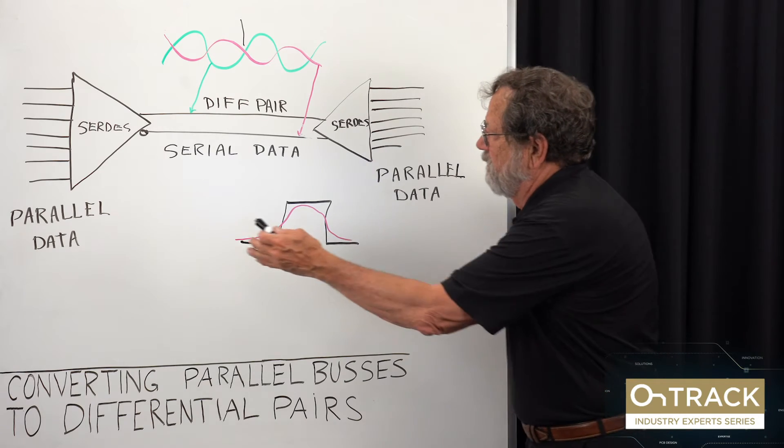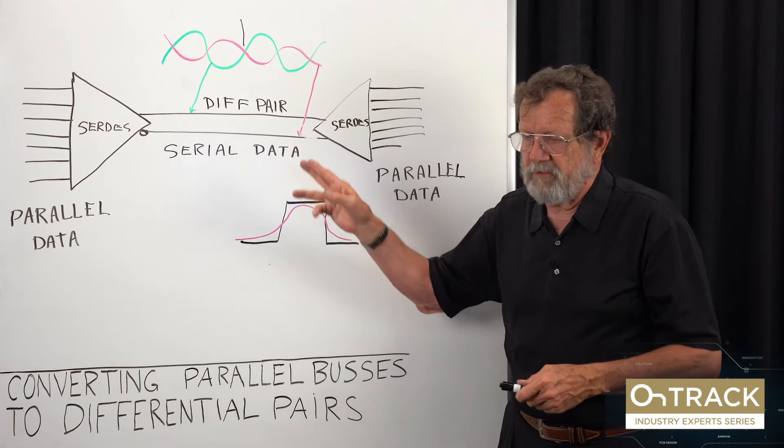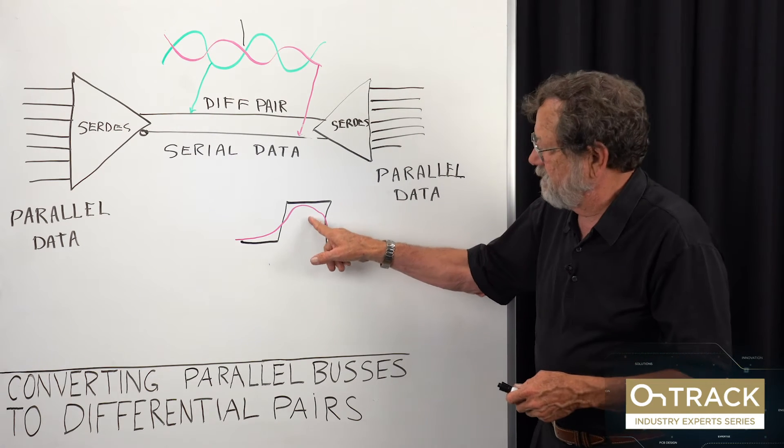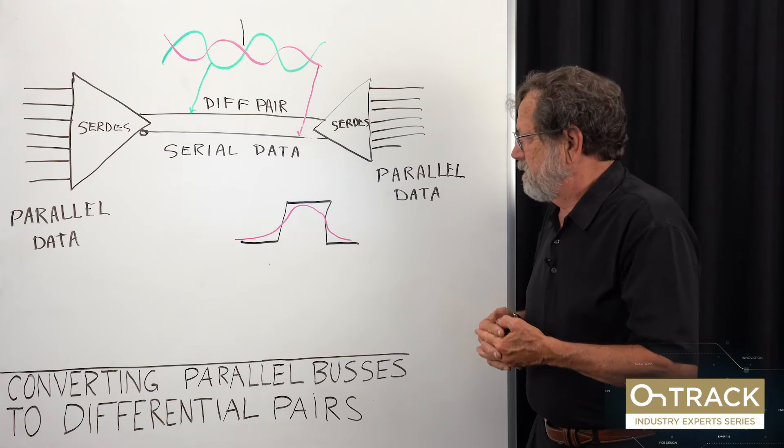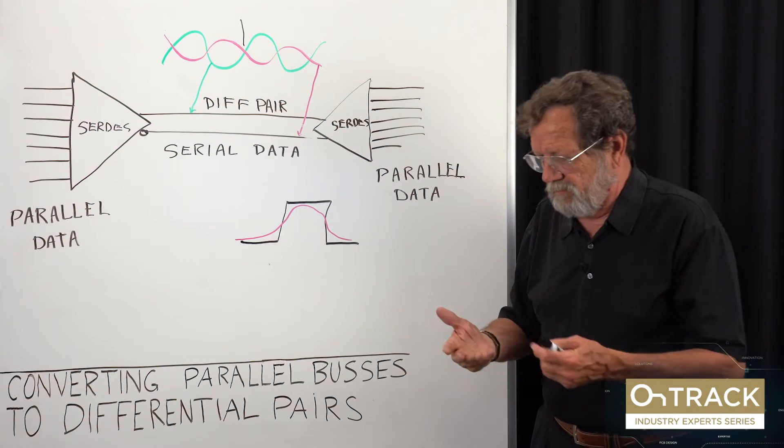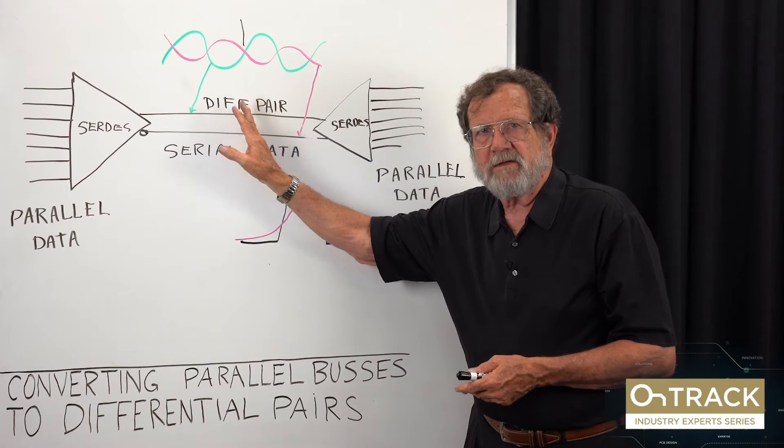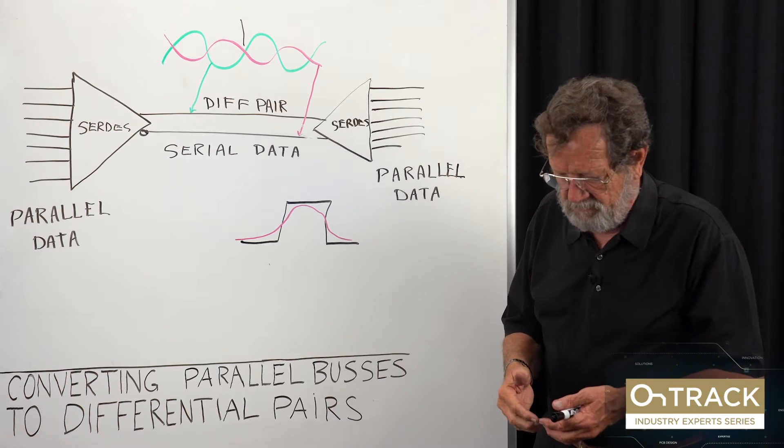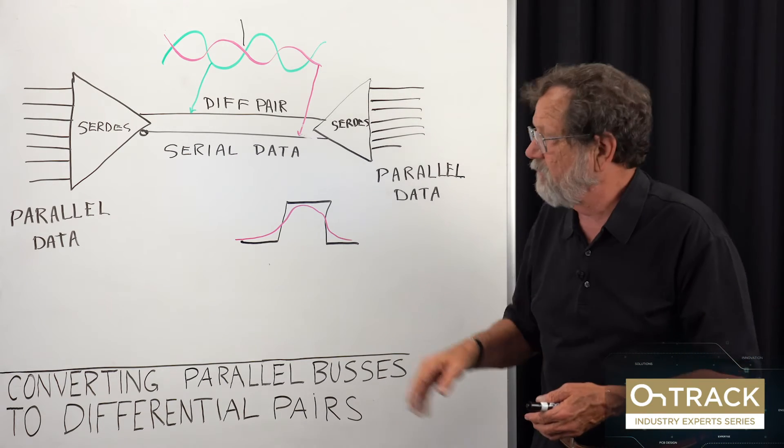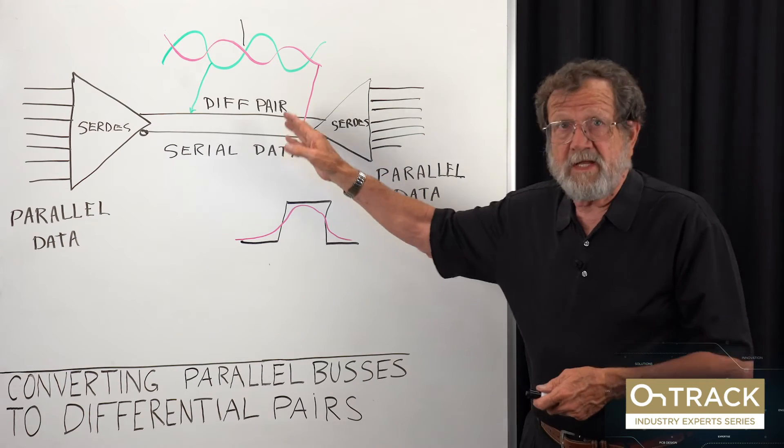So the original reason for doing this was ground offsets. The reason we do it now is we can drive a differential pair at a much higher data rate than we can drive a single-ended signal. Every day that we convert a parallel bus to a serial one, we do two things: we save a lot of wires and we get a much more robust link. And if it weren't for differential pairs, there would be no internet, because we could not run data at the rate we run it with parallel buses. Everybody who likes the internet, think differential pairs.